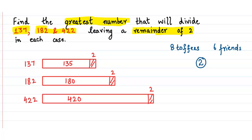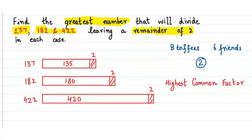That number has to be a factor of these 3 numbers, and because we have been asked for the greatest number, it has to be the highest common factor for all 3 numbers. So we will find the HCF, or highest common factor, of 135, 180, and 420.